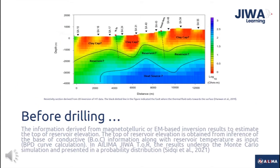Estimating the actual Top of Reservoir before drilling can be done by inferring the base of conductive information derived from magnetotelluric or electromagnetic-based inversion results. The base of conductive refers to the base of a low permeability zone, generally in the form of a smectite clay cap in the geothermal system. However, uncertainties of the interpretation remain high until the Top of Reservoir is determined directly from the pressure-temperature survey.